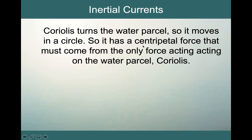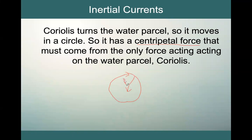This tells us the water parcel has a centripetal force that must come from the only force acting on it: Coriolis. When an object moves in a circle, there is a force going towards the center. This centripetal force is supplied by Coriolis and is equal to mass times V squared over R, where V is velocity and R is the radius of the circle.